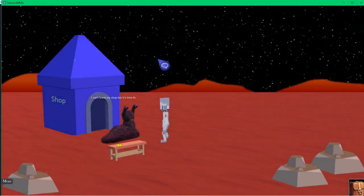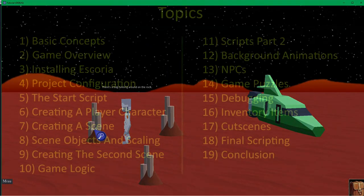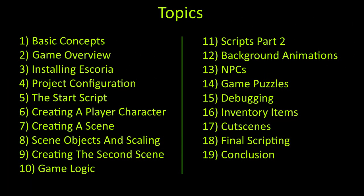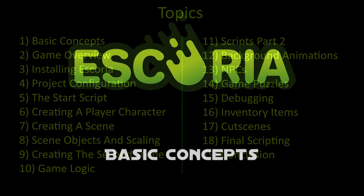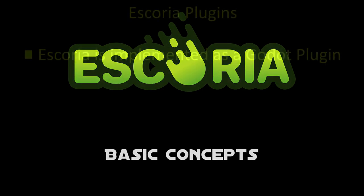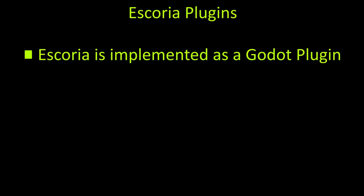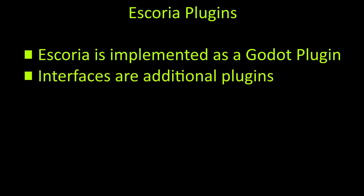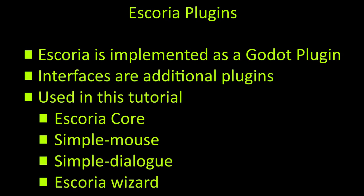In this video, I'm going to go through the basics of how to use Escoria and Godot to set up a point-and-click adventure game. Escoria and its components are distributed as Godot plugins. Aside from the core engine, there are plugins for dialogue and different user interfaces. I'll be using the Simple Mouse, Simple Dialogue, and Escoria Wizard plugins for this video, but these can be modified or swapped out at any time to change the look and feel of your game.